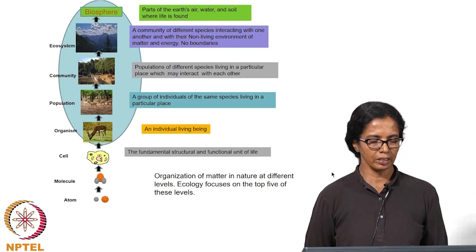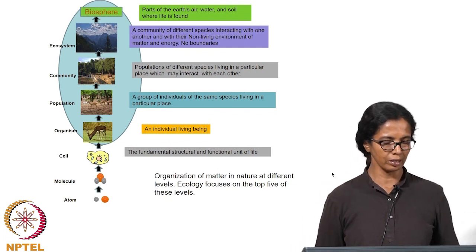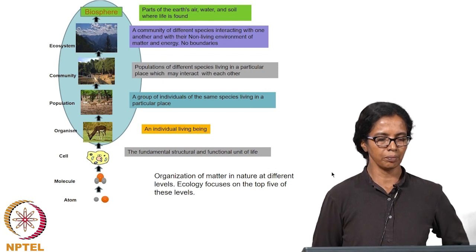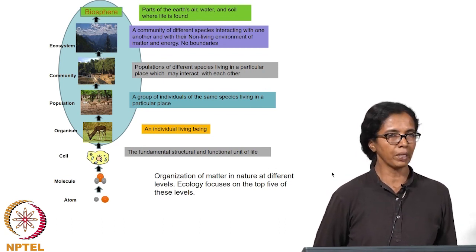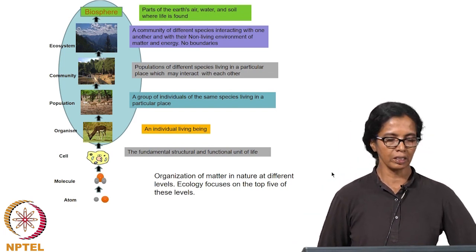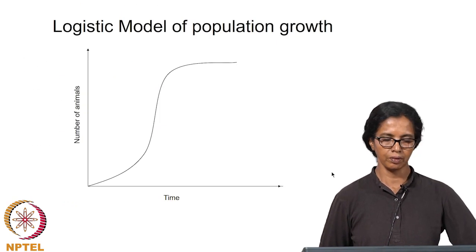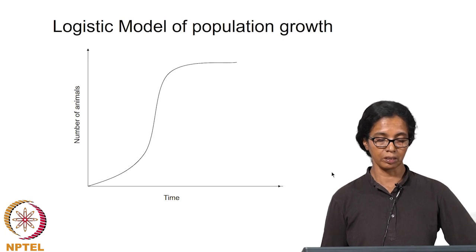In the last class we looked at the organization of matter in nature at different levels and the ecology that is focusing on organism, population, community, ecosystem towards biosphere. When it comes to organisms and population, we were discussing population dynamics and how it is controlled in a population or in a community. There are various models which give us an idea of a population that is growing.